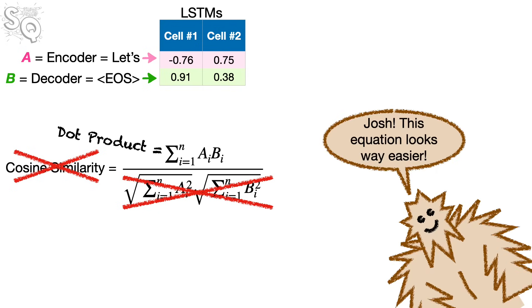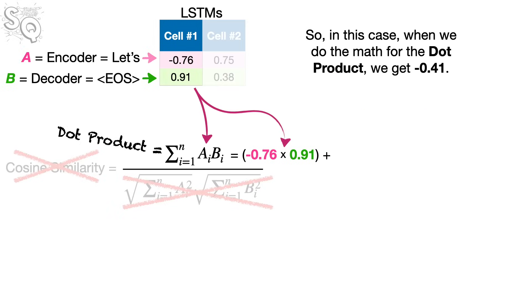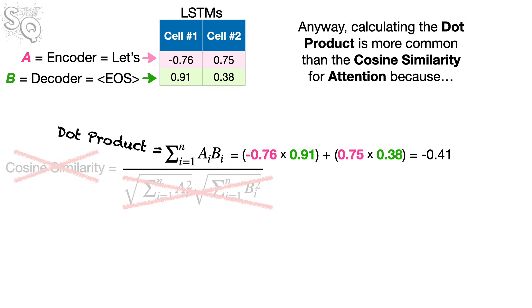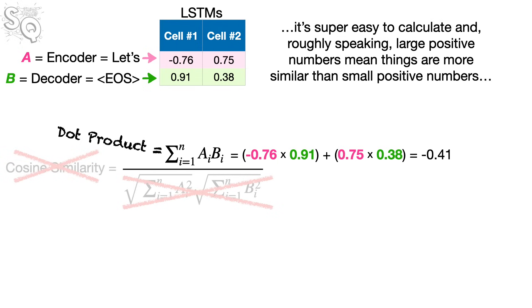Josh, this equation looks way easier. Bam! So, in this case, when we do the math for the dot product, we get negative 0.41. Anyway, calculating the dot product is more common than the cosine similarity for attention because it's super easy to calculate and, roughly speaking, large positive numbers mean things are more similar than small positive numbers. And large negative numbers mean things are more completely backwards than small negative numbers.